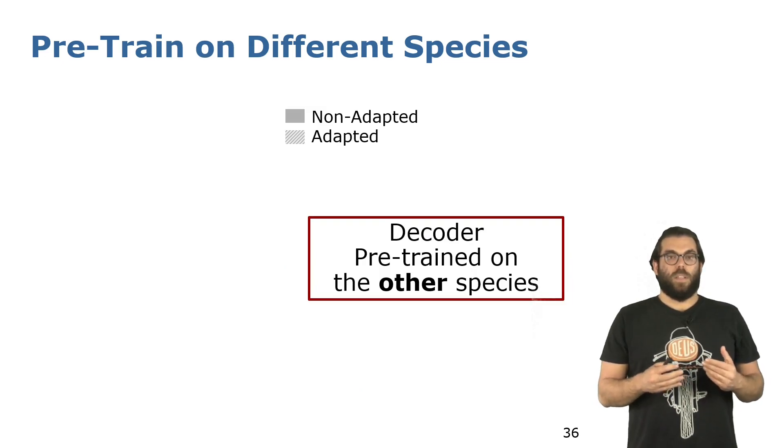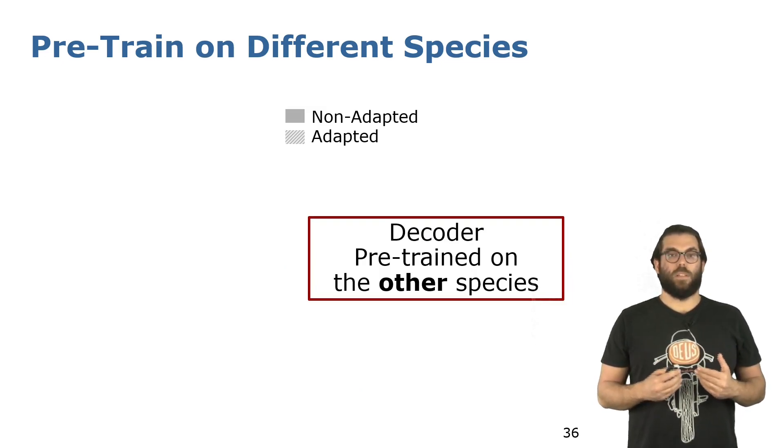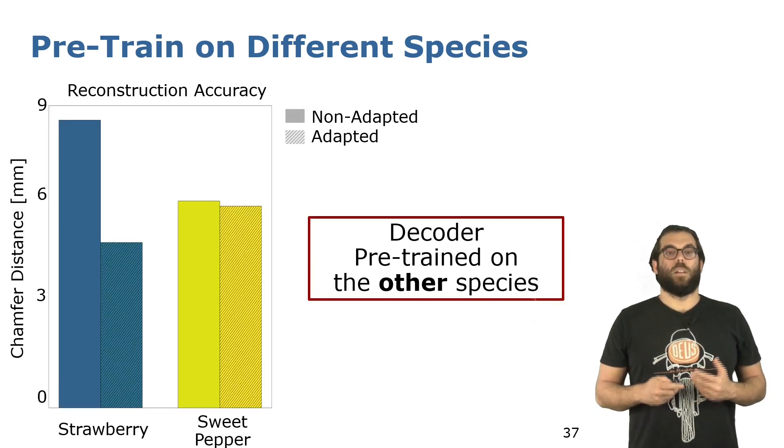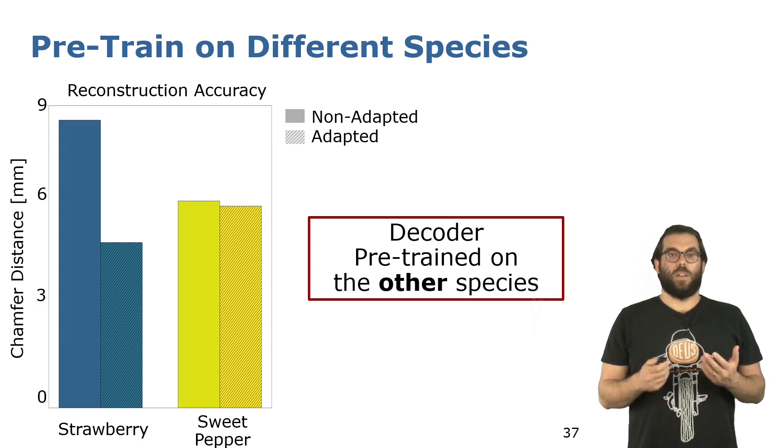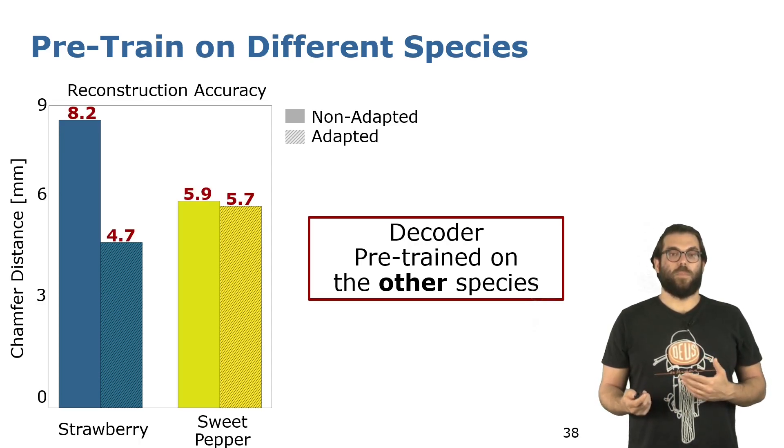And now let's move on to the training and pre-training done on different species. As you can see here on the graph, adapting the network from one species to another is clearly beneficial. This is more visible for the strawberry than the sweet pepper, but we can still see a clear benefit in adapting our prior knowledge.